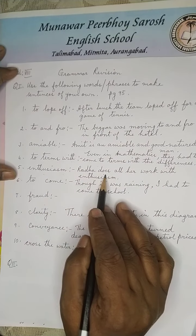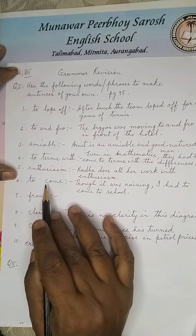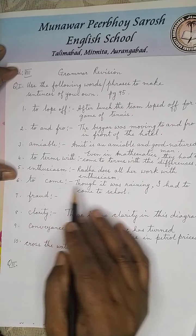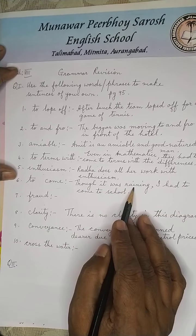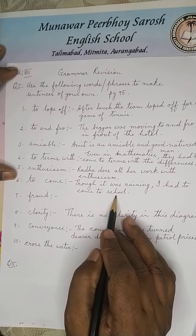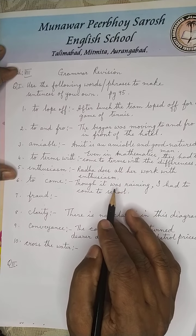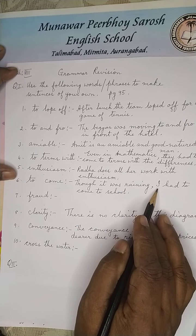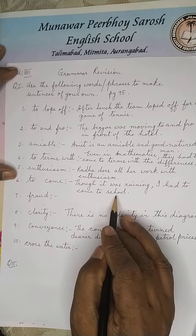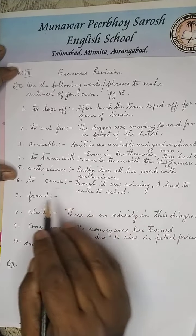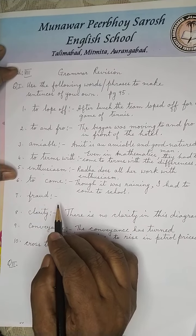Enthusiasm: Radha does all her work with enthusiasm. To come: Though it was raining, I had to come to school. You can write both sides of the sentence — you can write 'I had to come to school, though it was raining.' These are all words and phrases.